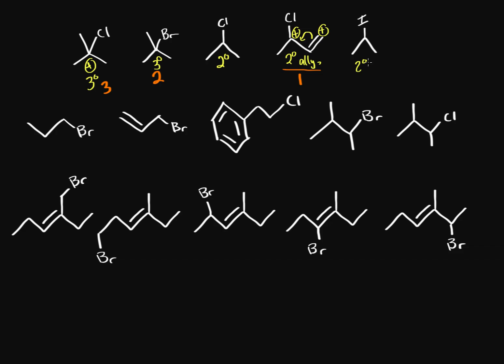Now we have two secondary cations: one with chlorine and one with iodine. Iodine is further down the periodic table, bigger than chlorine, more polarizable, and more stable with a negative charge — so it's a better leaving group. The secondary iodine has higher SN1 reactivity than the secondary chlorine. Notice that the tertiary and secondary cations are equally stable, but SN1 reactivity differs because of the leaving group.